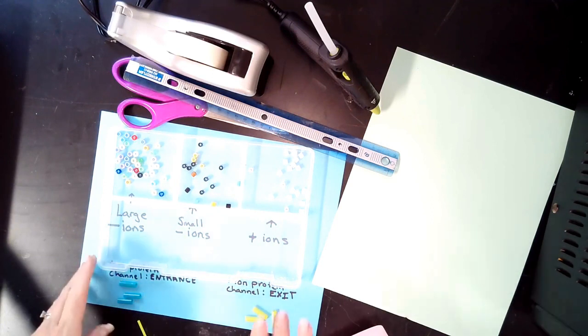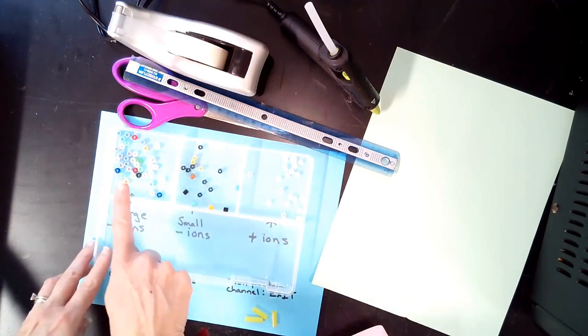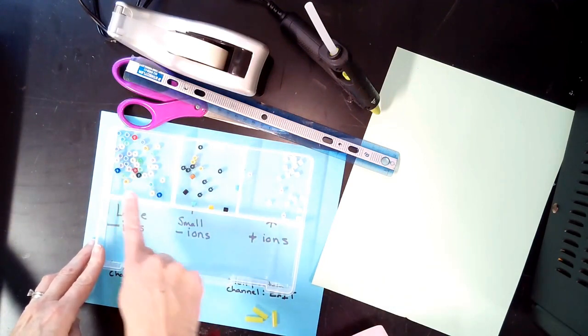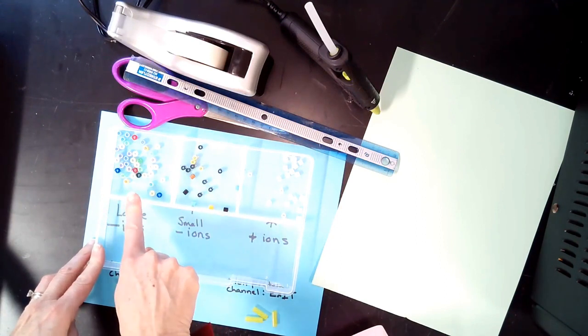These are the materials you should have gathered. So you have large ions, sorry, large negative ions.